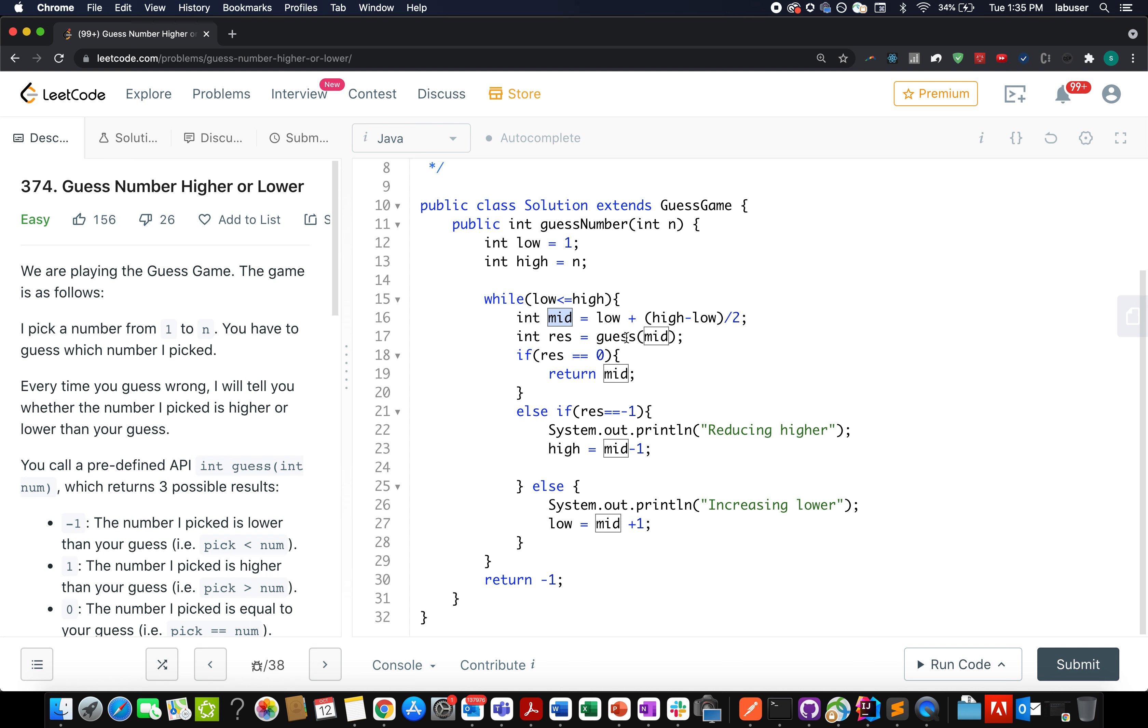We invoke the helper method guess on mid and let's iterate through all the possible values of result. If result happens to be zero, we return mid as an answer. Otherwise, if result happens to be equal to minus one, what we're going to do: we'll update high to mid minus one. We are reducing high value.